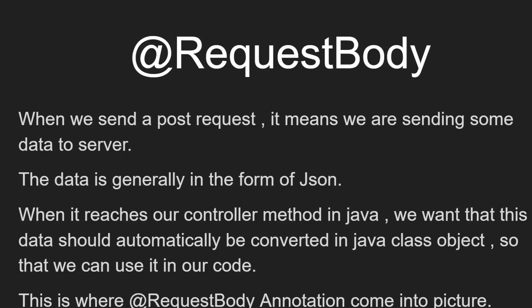When we send a POST request, we are sending some data to the server. Our APIs — our Java code — are on the server. The data we send in the POST request is generally in the form of JSON, and we send it through Postman. When that POST request reaches our controller method in Java, we want the data to automatically be converted into a Java class object.